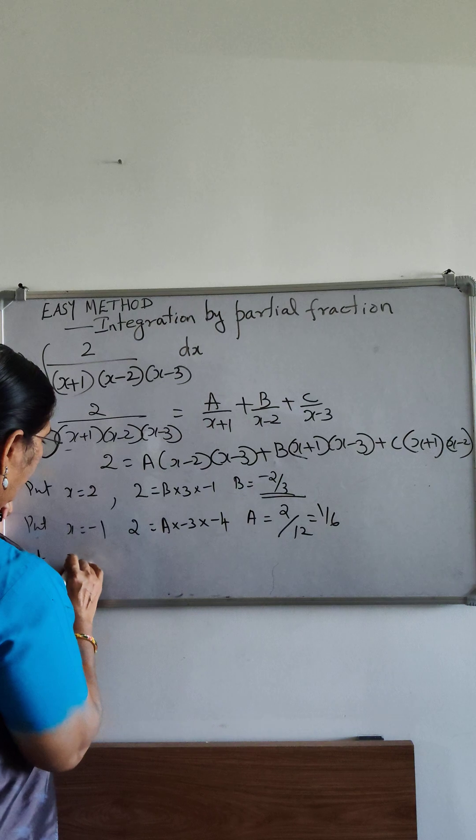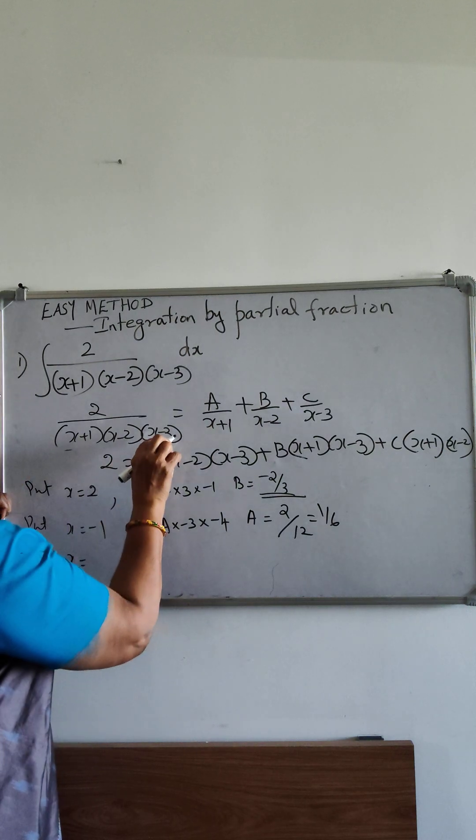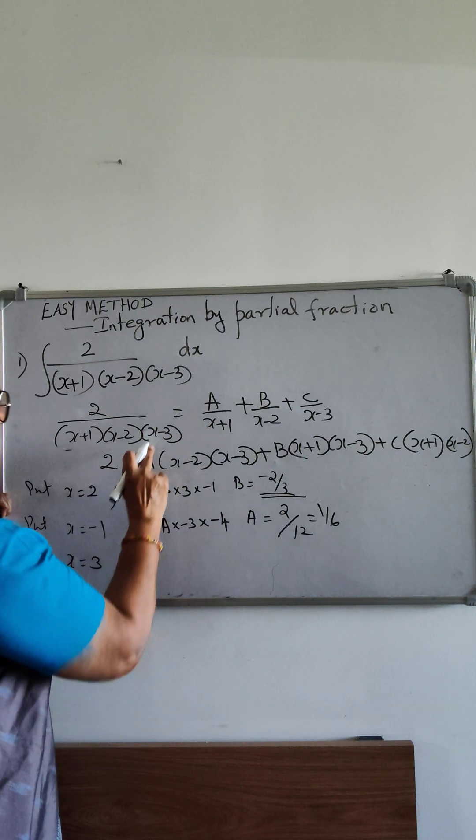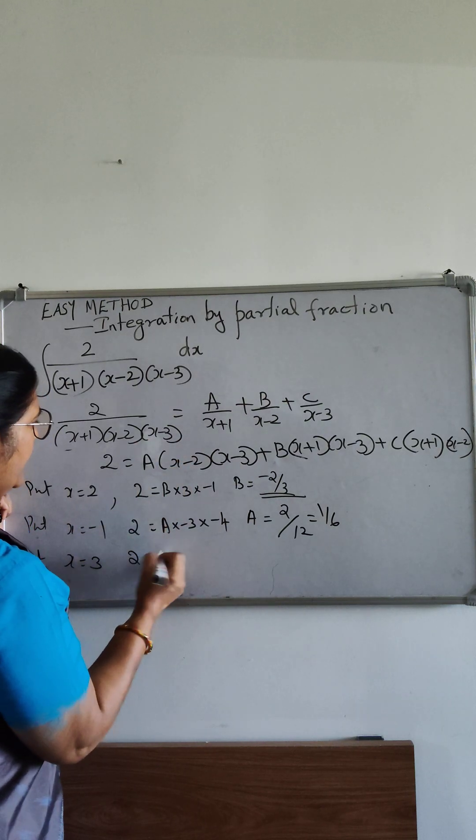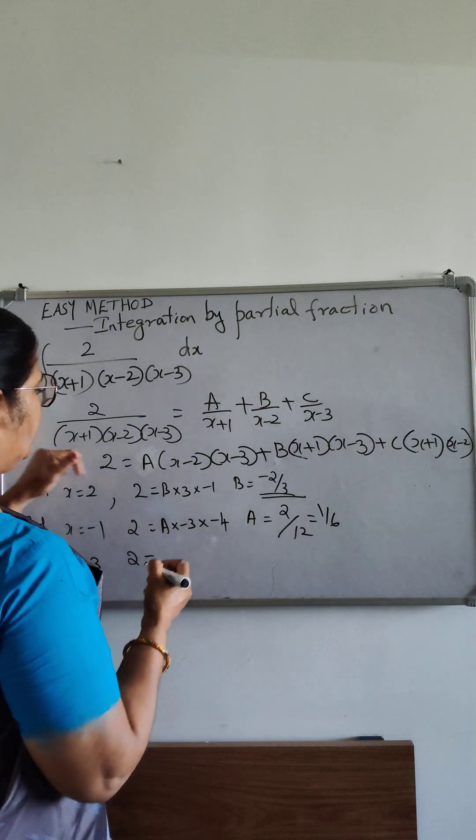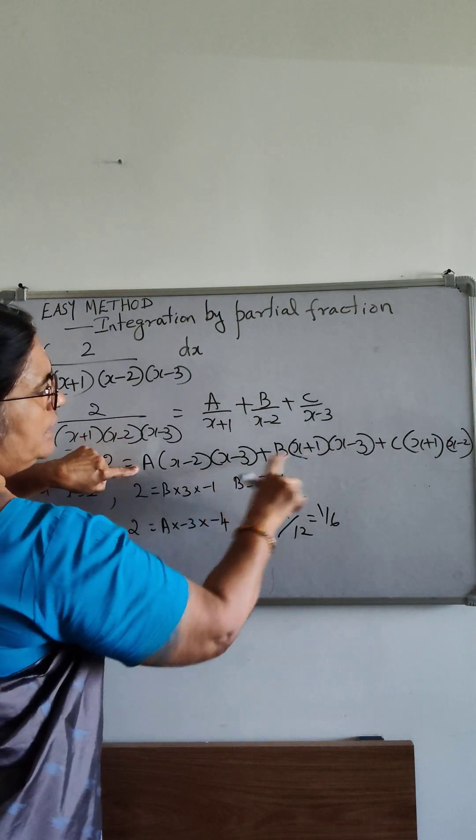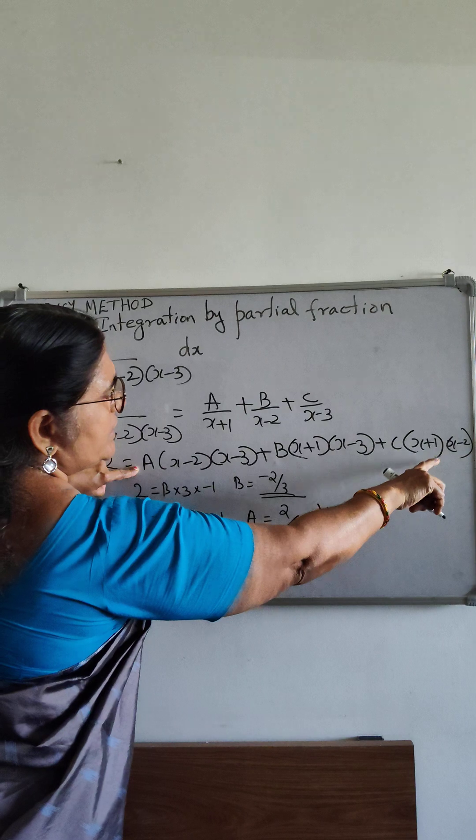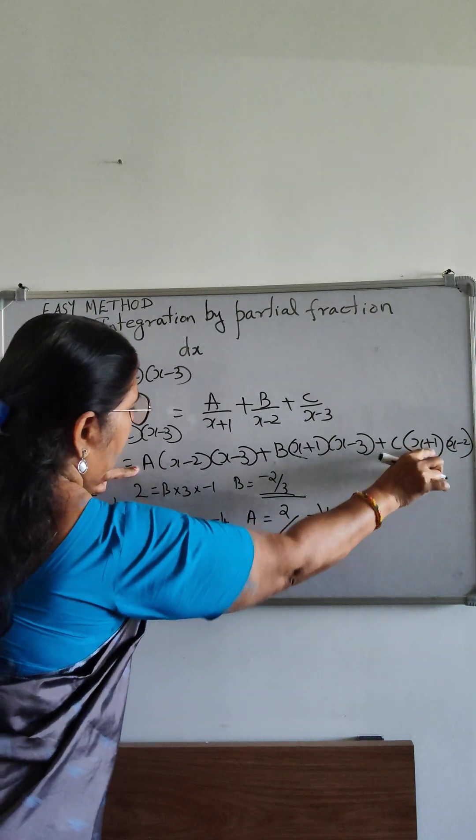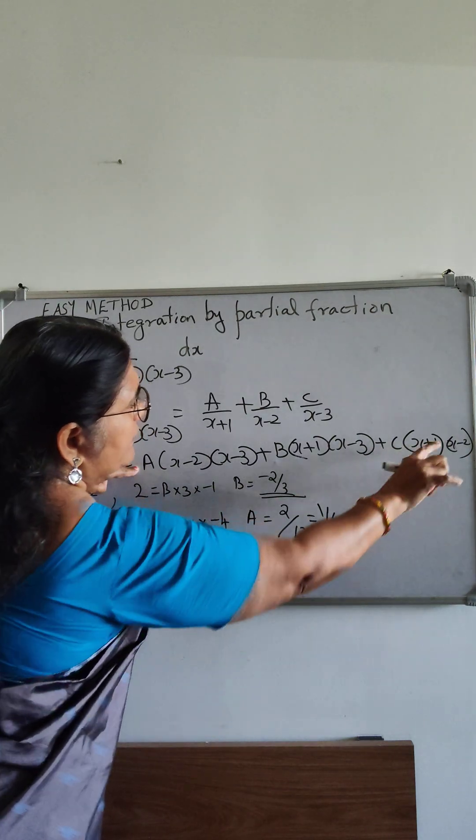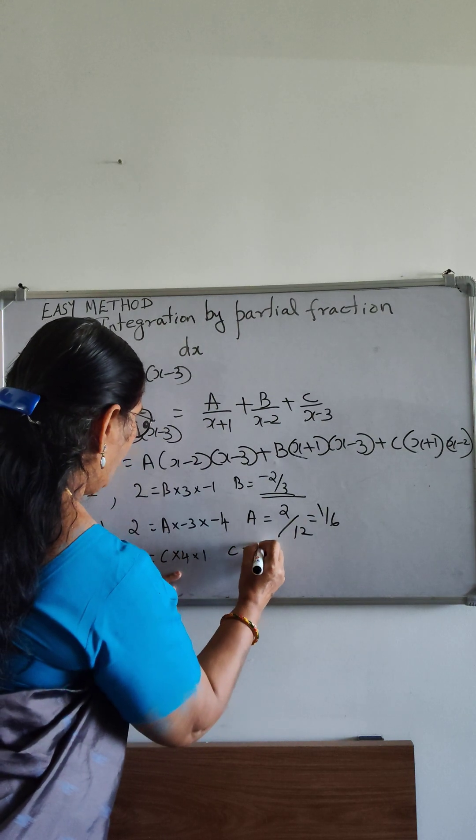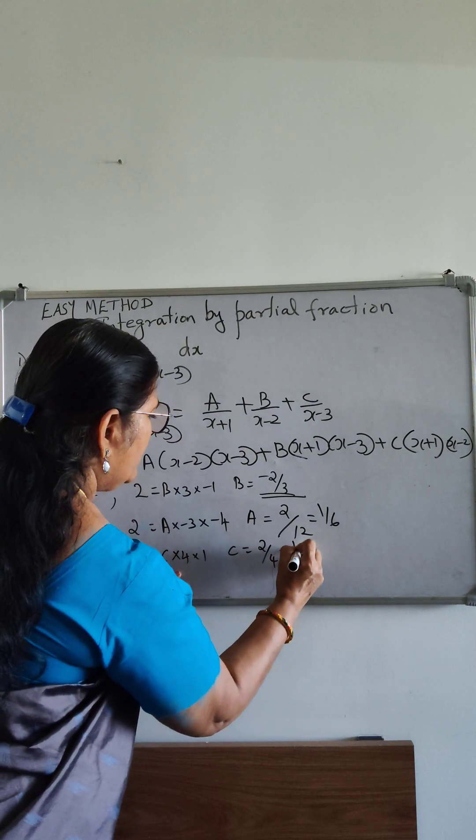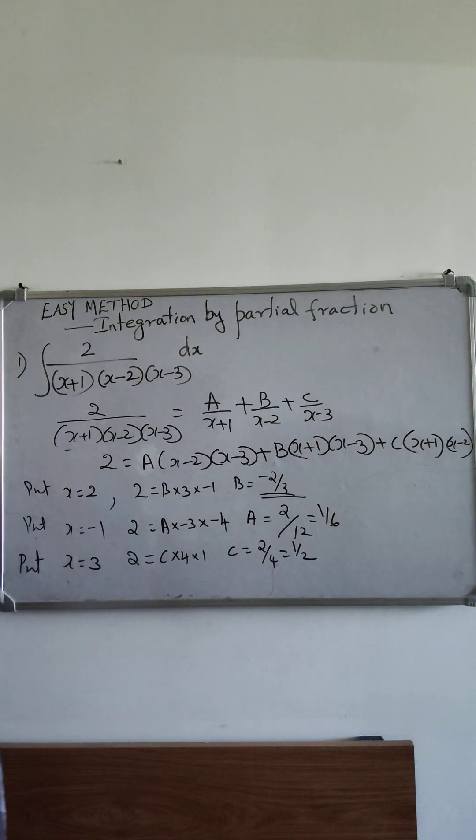Similarly, put x equal to 3. That is x minus 3 equal to 0 and x equal to 3. So put x equal to 3. Then 2 equal to, these two terms vanish. So c into 3 plus 1 is 4, 3 minus 2 is 1. So c equal to 2 by 4, that is 1 by 2.